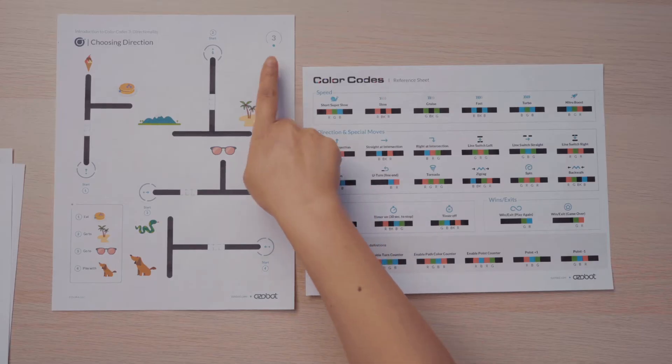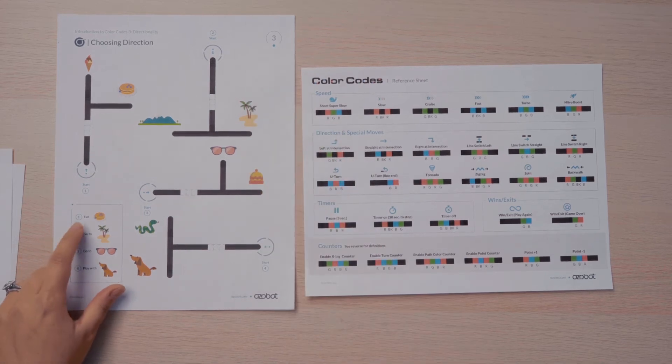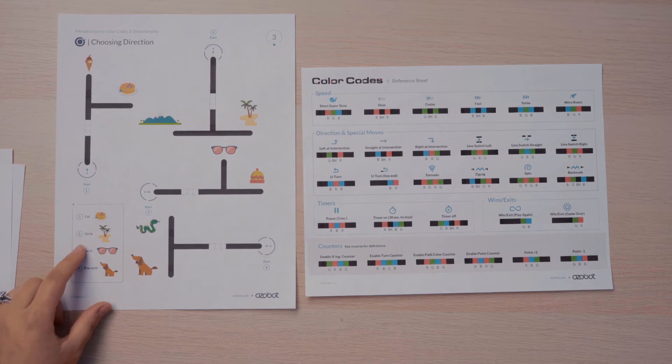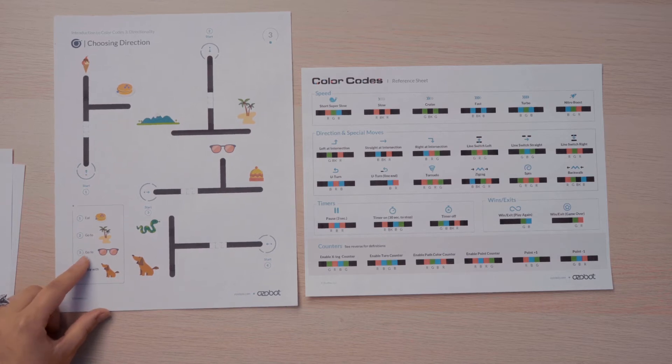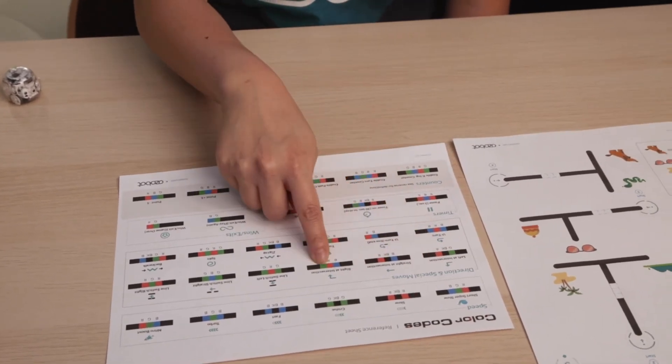Let's keep practicing. Find page three. On this page, we want to code the bot to eat pancakes, to go to the beach, to go to the sunglasses, and then to play with the dog. I have my color code reference sheet here to help remind me which color codes I can use.